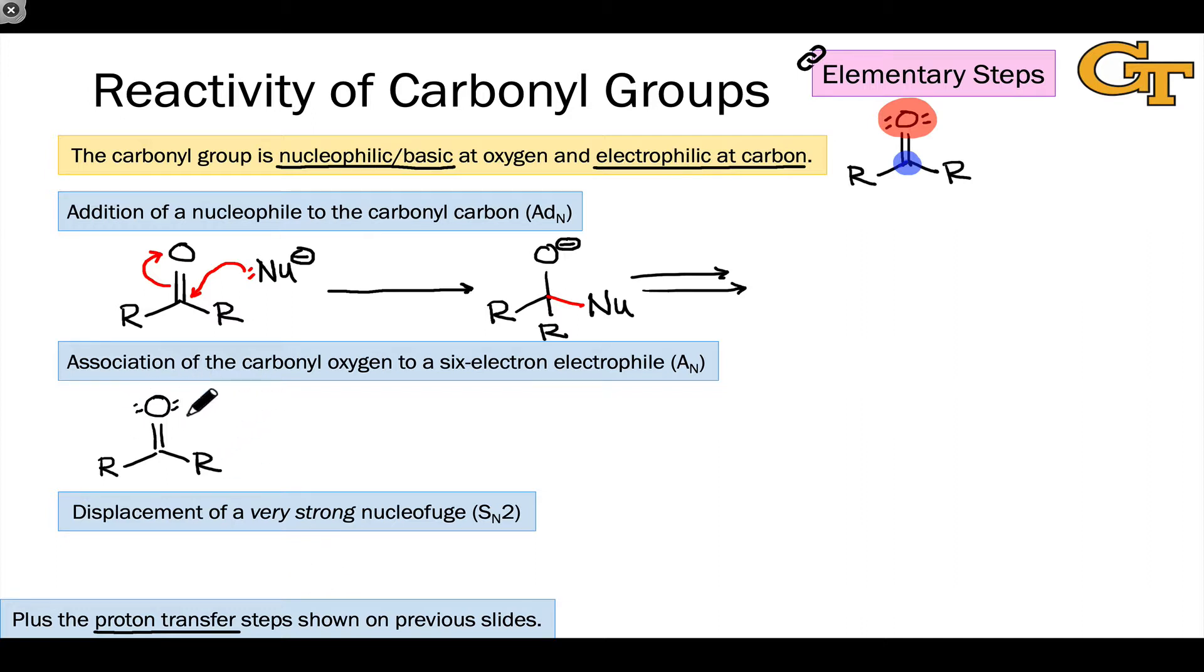When the carbonyl oxygen acts as a Lewis base, it coordinates to a Lewis acid, and this is often something that includes a six-electron building block. Because the addition of two more electrons to that building block would give it an octet, this coordination through an A sub N, or association of a nucleophile elementary step, tends to be a good thing from the electrophile's perspective.